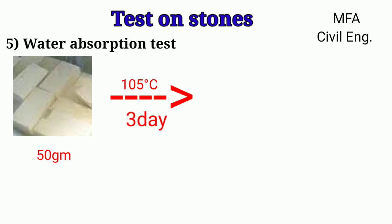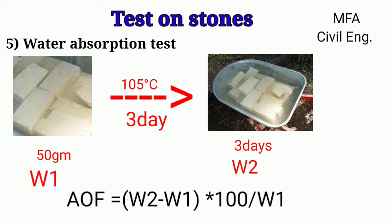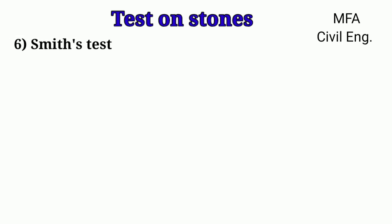Water absorption test: In this test, 50 grams of specimen is placed in an oven at 105°C for three days and then cooled in a desiccator. Next, the specimen is immersed in distilled water for three days. If W1 is the weight of the dry sample after cooling and W2 is the weight of the wet sample after removal from distilled water, then the water absorption is given by: Absorption = ((W2 − W1) / W1) × 100.